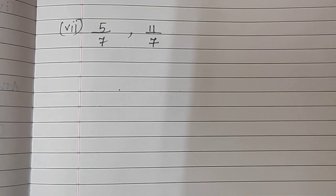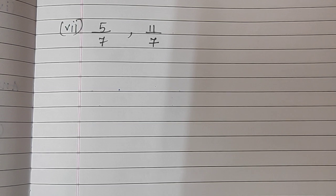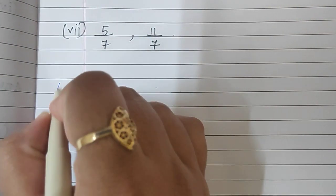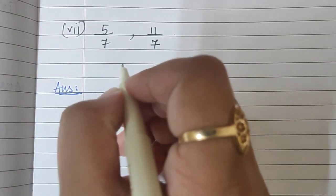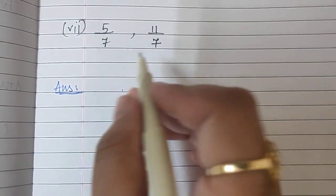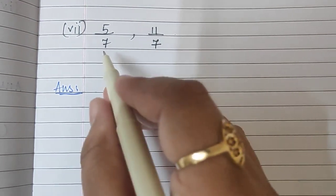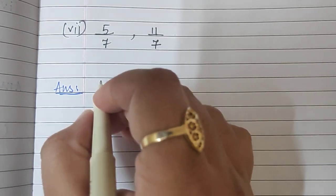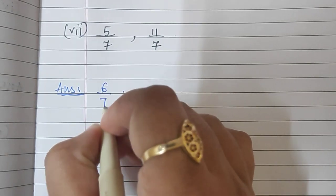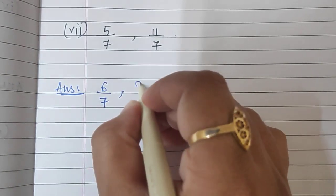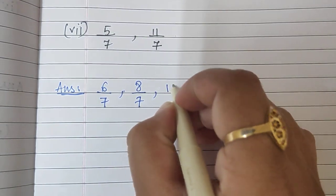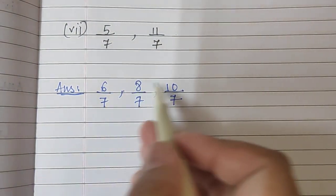The next sum is 5/7 and 11/7. The denominator is already equal. The numbers between 5 and 11 are 6, 7, 8, 9, 10 — so we can choose any three. Our answer: 6/7, 8/7, and 10/7. All these numbers lie between the two fractions.